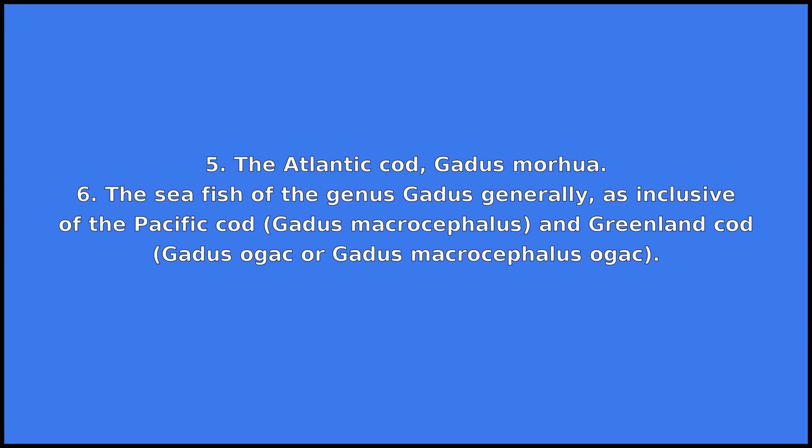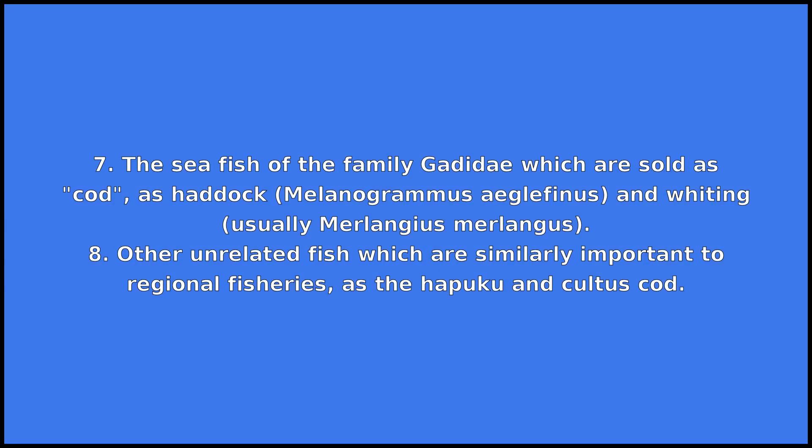6. The sea fish of the genus Gadus generally, as inclusive of the Pacific Cod, Gadus macrocephalus, and Greenland Cod, Gadus ogac or Gadus macrocephalus ogac. 7. The sea fish of the family Gadidae which are sold as cod, as haddock, Melanogrammus aeglefinus, and whiting, usually Merlangius merlangus.